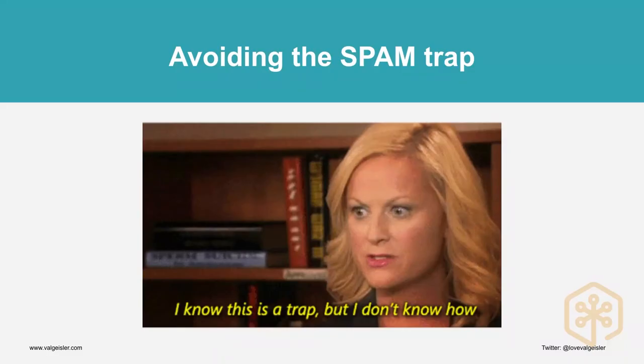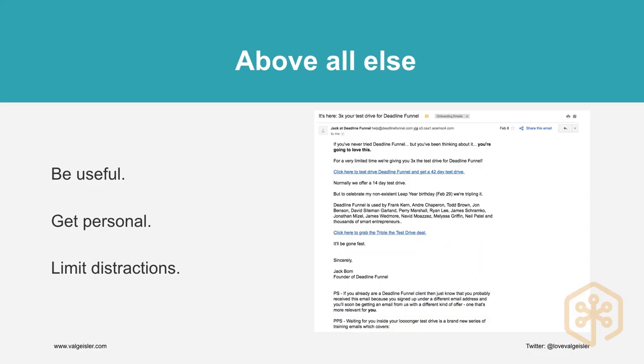You want to avoid the spam trap in all of these emails. The key to getting people to convert from your emails is getting them to actually see and open them. To do that, you want to be useful, you want to be personal — as Leanna talked about — and you want to limit distractions. Each of your onboarding emails has a job, and this framework gives you those jobs. Here's an example of an email with only two links, both pointing to the same place — very distraction-free, super useful, and really personal to that particular customer's journey.